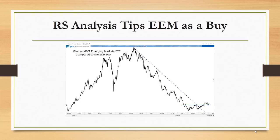In the chart, this is a ratio of the ETF called EEM compared to the S&P 500 index. As you can see, the S&P 500 index outperformed from 2010 until last year, and the outperformance is indicated by the rising line. So when the line is rising, EEM, the numerator in our ratio, is outperforming. When the line is declining, the S&P 500 is outperforming. So after a long downtrend, we broke through the downtrend last year.